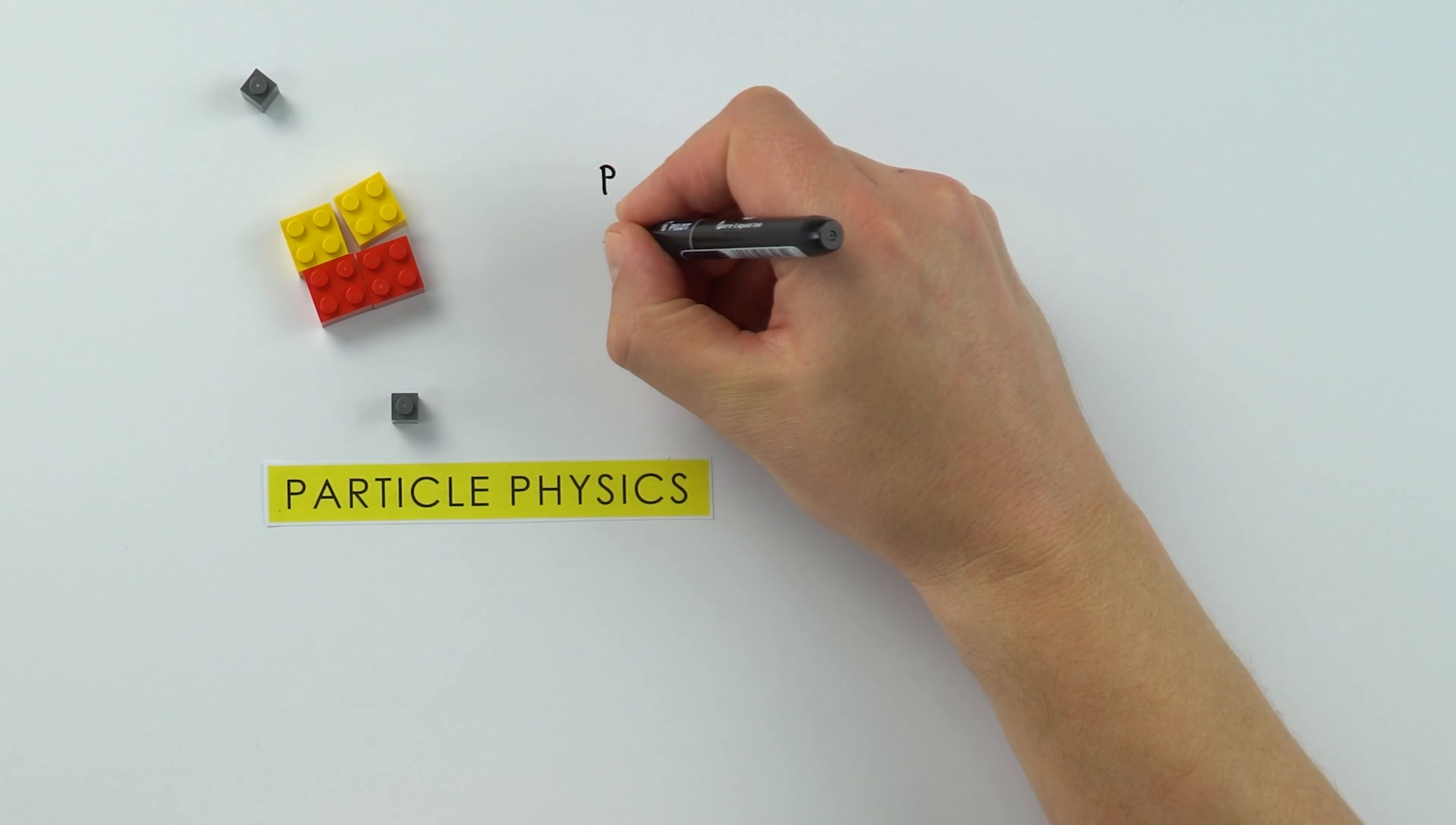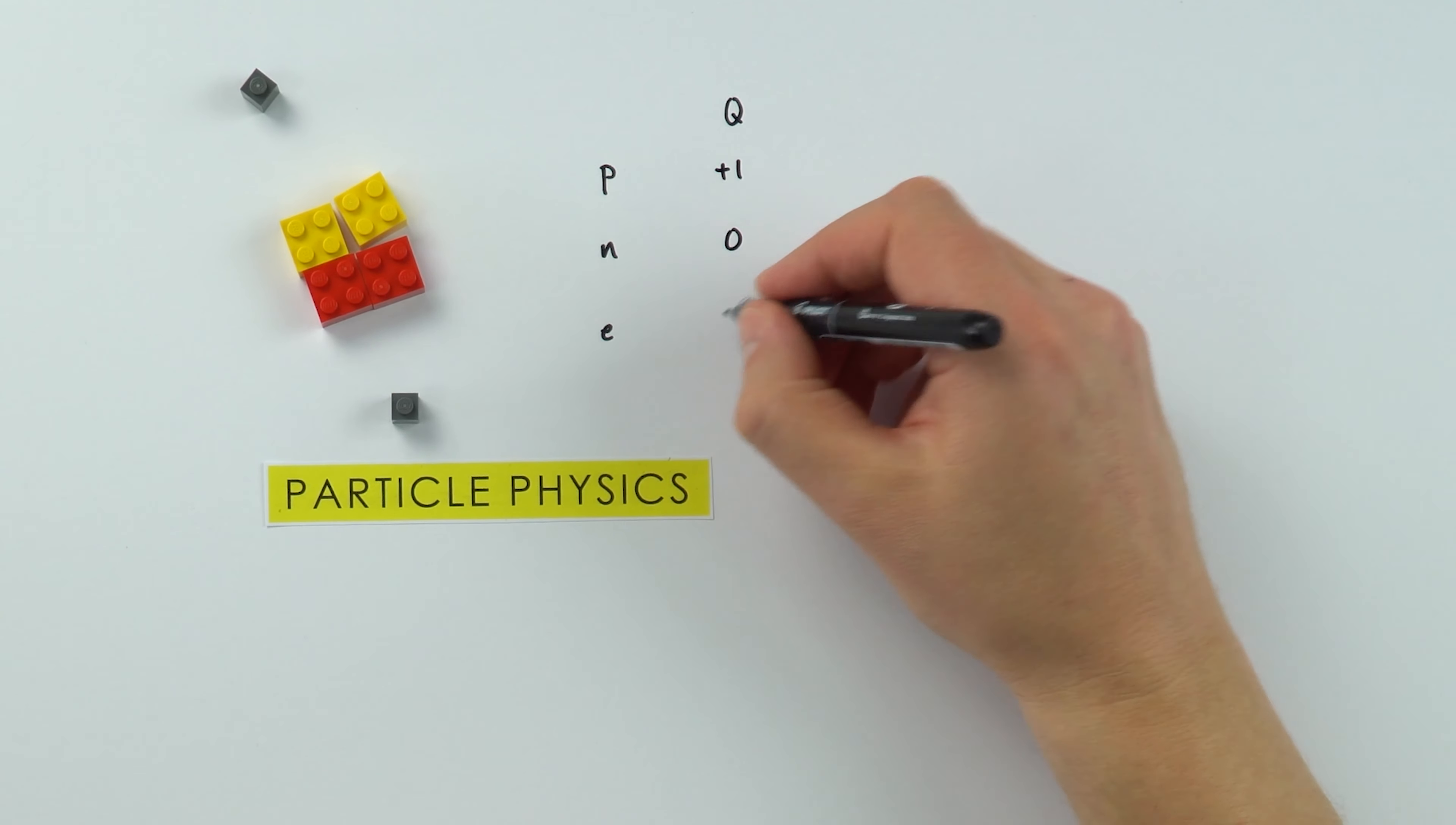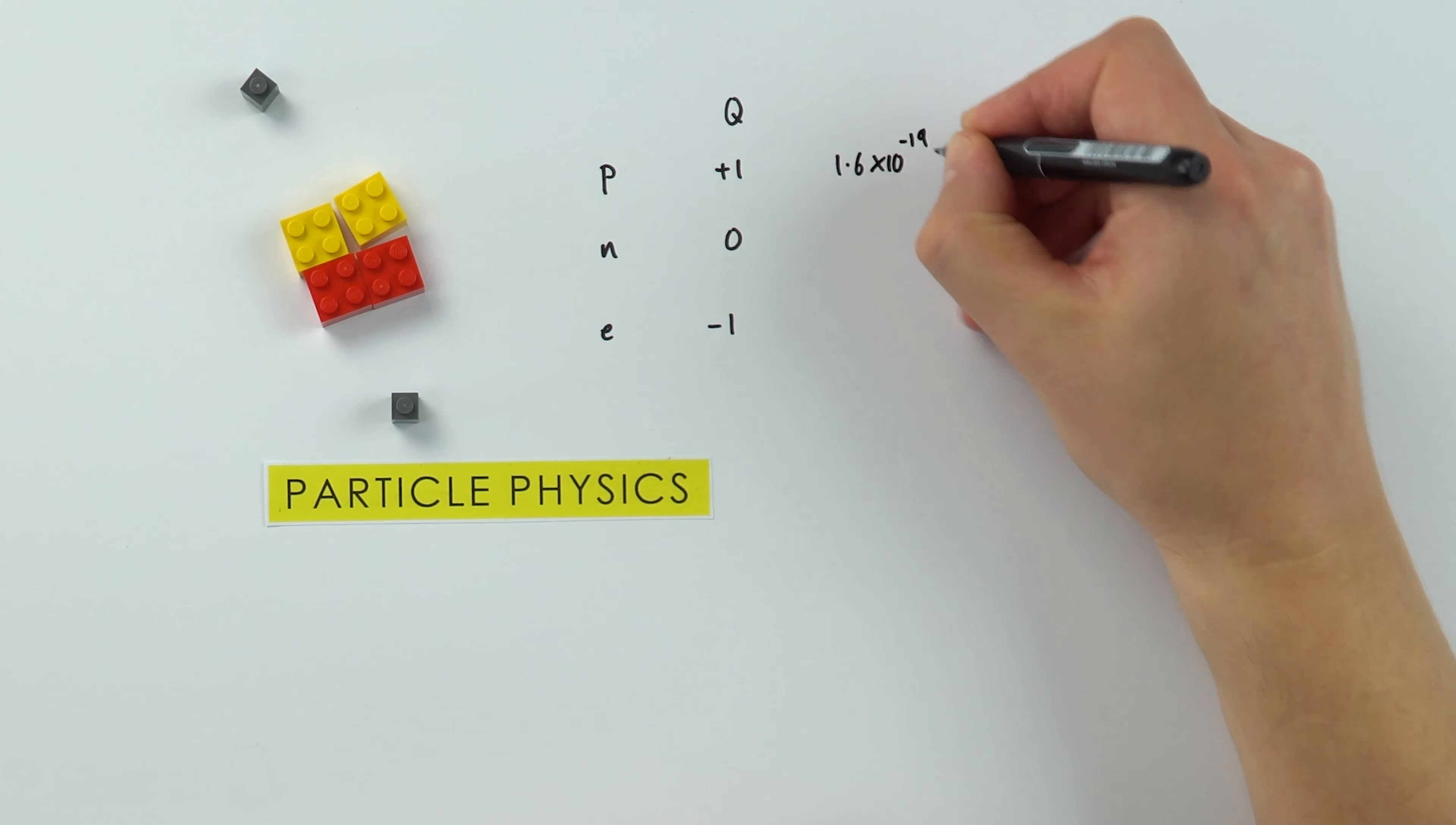Here we've got a proton, a neutron, and an electron. At GCSE we tend to talk about the charges on these: a proton being positive, a neutron zero, and an electron negative. Now really these are just the relative charges. At A level we actually quantify the charge in coulombs.